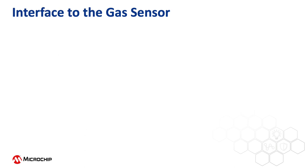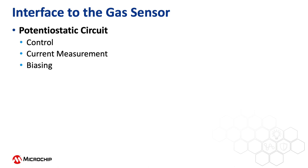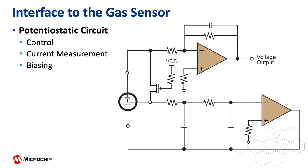Now that we understand the fundamentals of how a gas sensor works, let's explore the external circuitry required to properly measure the current that flows between the electrodes and to provide control for the sensor. This circuitry is called a potentiostatic circuit and serves three main functions: control, current measurement, and biasing. A typical potentiostatic circuit is shown here, which we will now explore in more detail.